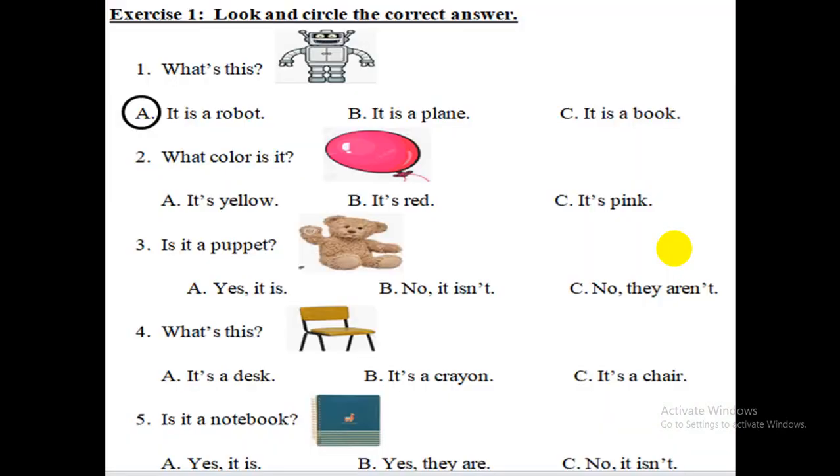Exercise 1. Look and circle the correct answer. Number 1 is the example. We do number 2. What color is it? A. It's yellow. B. It's red. C. It's pink. Your answer. Yes, C. It's pink. It's the correct answer. The others, please do the same.